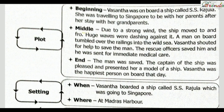In the middle: due to a strong wind, the ship moved to and fro. Huge waves were dashing against it. A man on board tumbled over the railing into the wild sea. One cyclone or some sort of strong wind was there, and suddenly one man tumbled over the railing. Basantha shouted for help to save the man. The rescue officers saved him, and he was sent for immediate medical care.